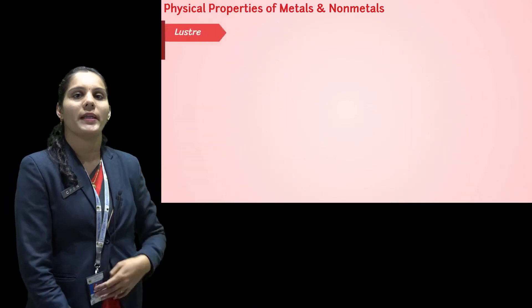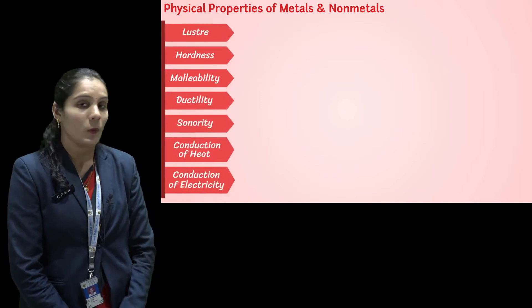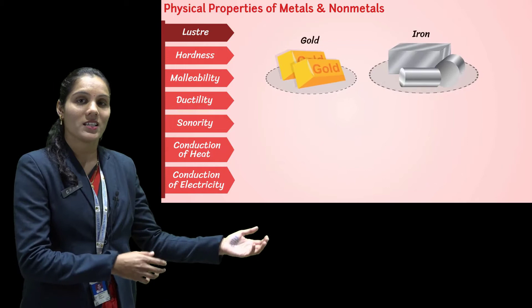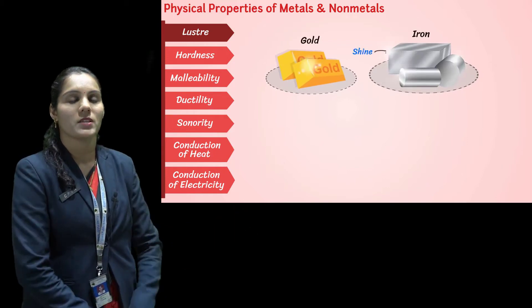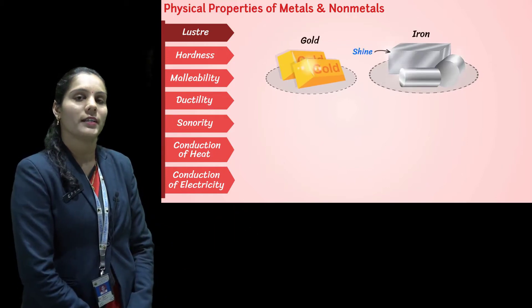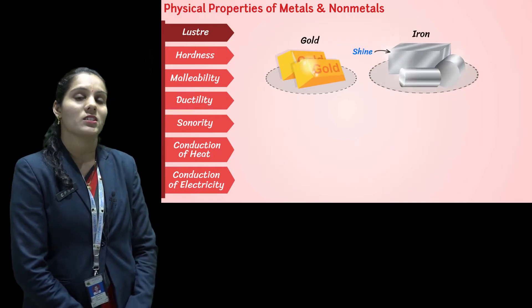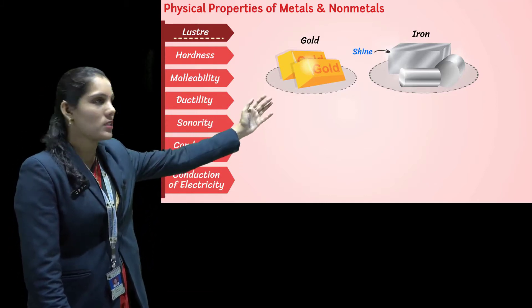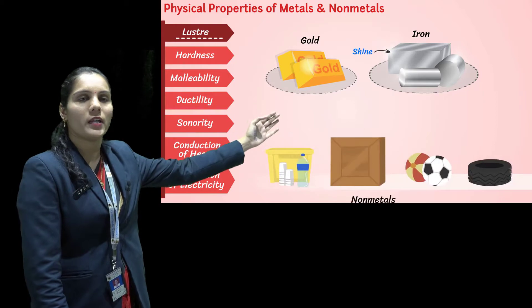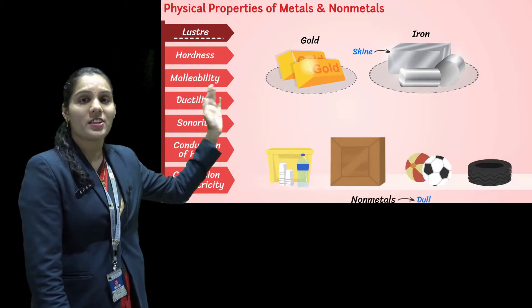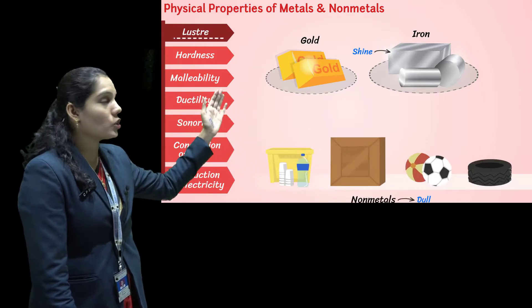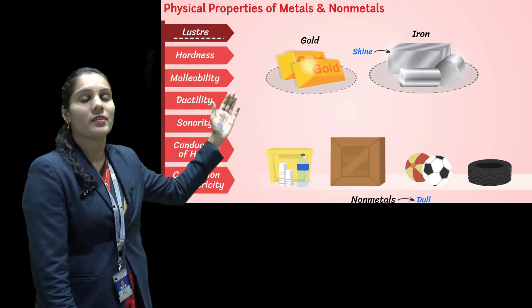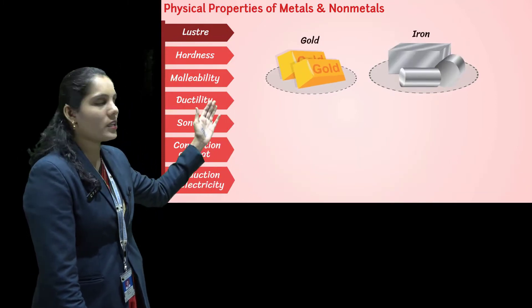The first property of metal is the lustrous property. What is meant by lustrous property? If a thing has a shiny surface, it has the lustrous property. Examples include gold, silver, and aluminium — they all have a shiny surface, which means they are showing the lustrous property.